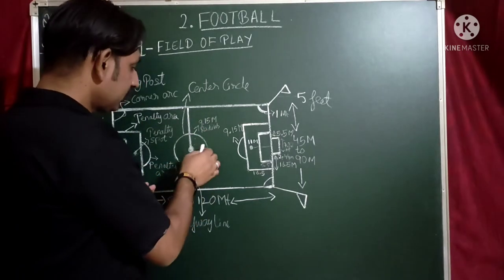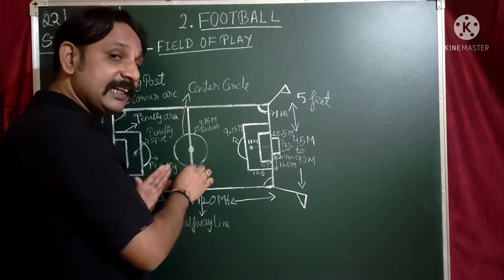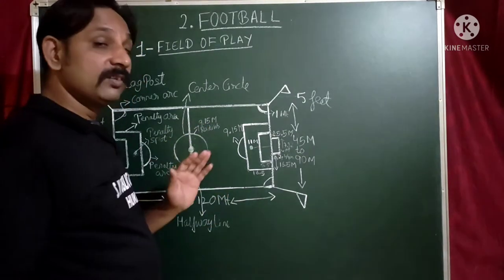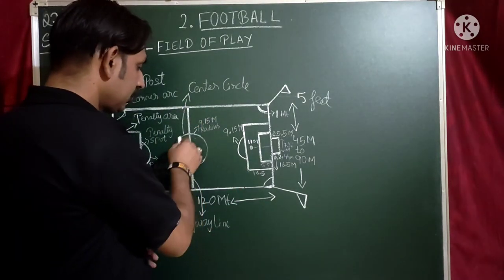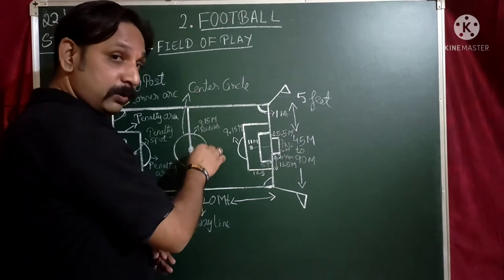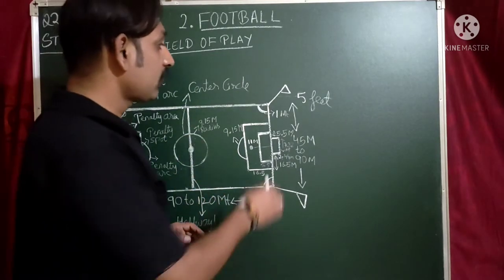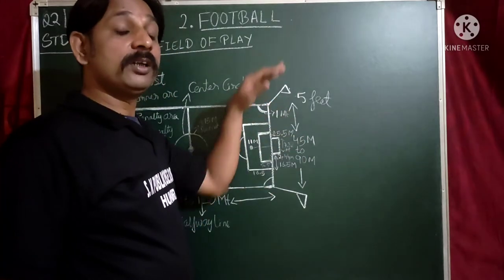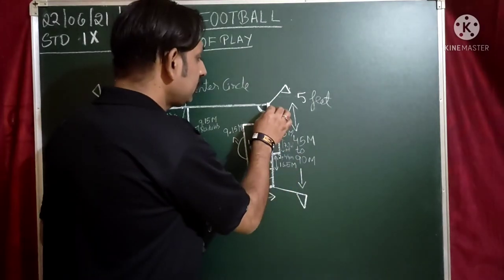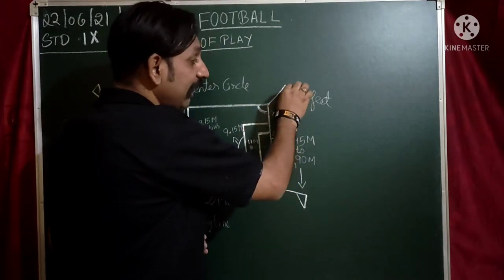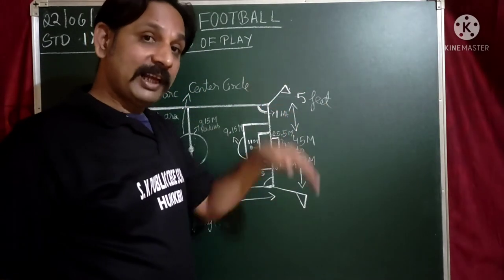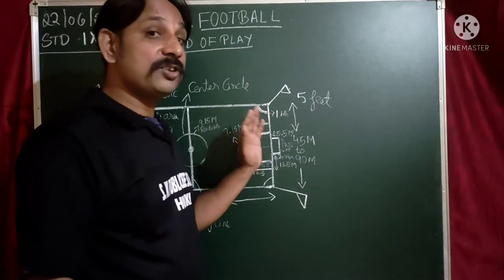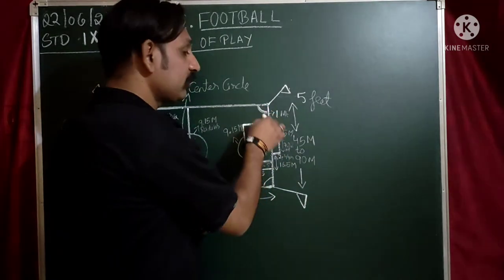The center circle is drawn from the center spot with a radius of 9.15 meters. The height of the flag post from the ground is 5 feet. From the flag post, an arc of 1 meter is drawn — this is the corner arc.